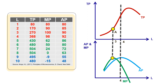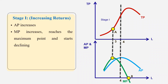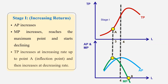Then we have the fourth unit of labor. Up to four units of labor, average production increases — you can see in the table — and then it starts declining. This is stage one. The characteristics of the first stage: average production increases, marginal production reaches its maximum point and starts declining, and total production increases at an increasing rate up to point A, then increases at a diminishing rate.